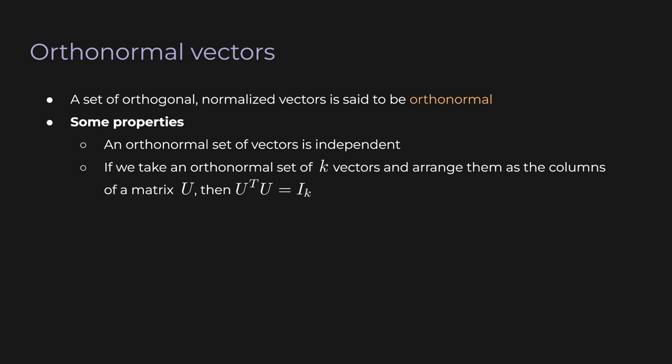There are two important properties that follow from this definition. An orthonormal set of vectors is independent — this is also true for an orthogonal set of vectors. Since the dot product between any two vectors is zero, we can't express any of the vectors as the sum of the others; each vector lies along a unique dimension. The next property is that if you have a set of k orthonormal vectors arranged as the columns of a matrix u, then u transpose times u will equal the k×k identity matrix. This is because the dot product of two different orthonormal vectors is zero, and the dot product of an orthonormal vector with itself is one — so you end up with ones along the main diagonal and zeros everywhere else.